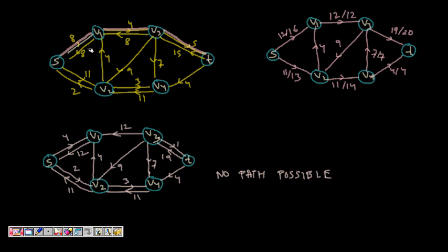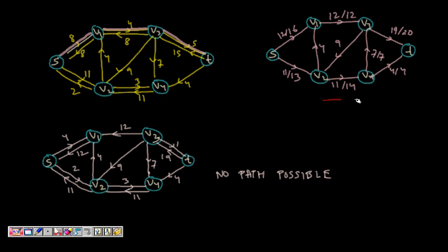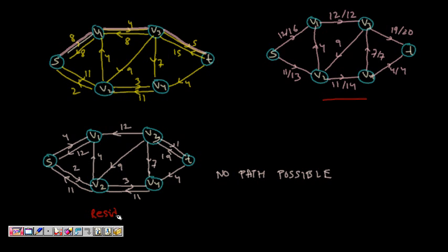After this augmentation: V1→V3 becomes 12 out of 12 fully used, V3→T becomes 19 out of 20 used, and V1→V3's direction is now fully saturated. The updated flow graph is produced and converted again to a residual graph, giving our new residual graph after this fifth augmenting path.